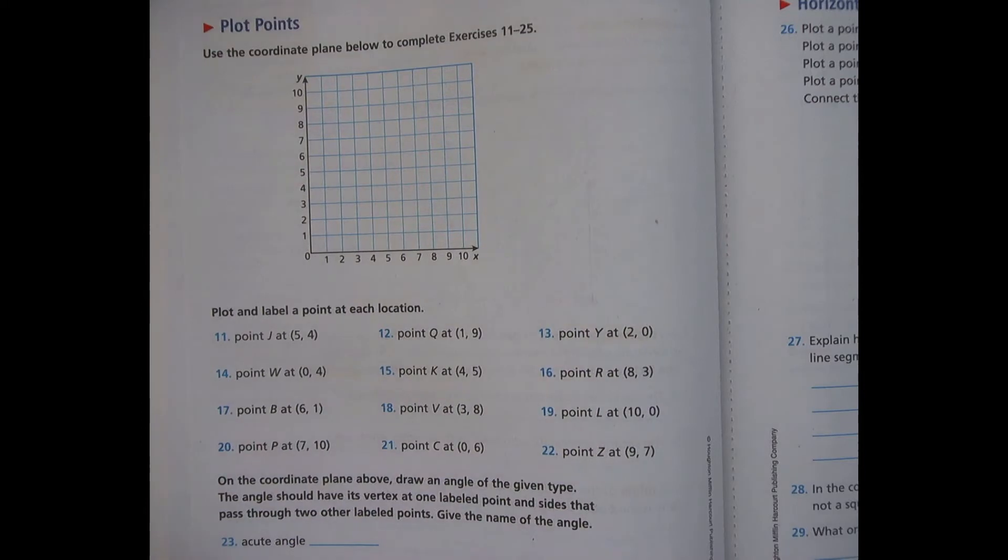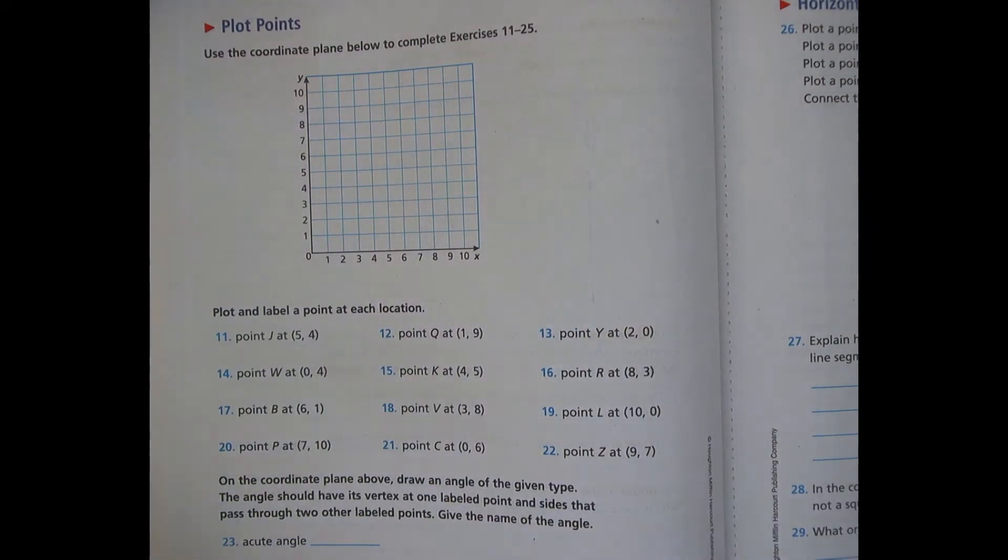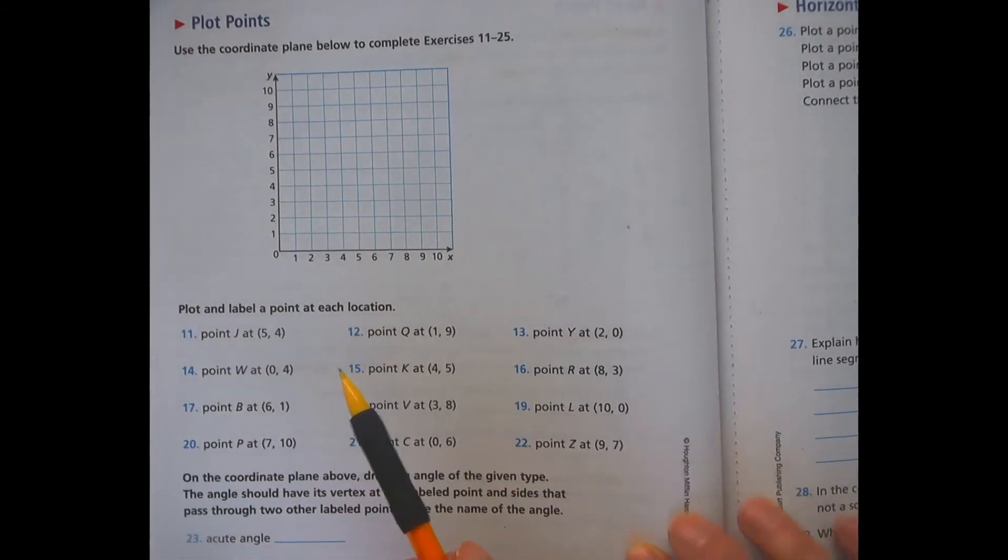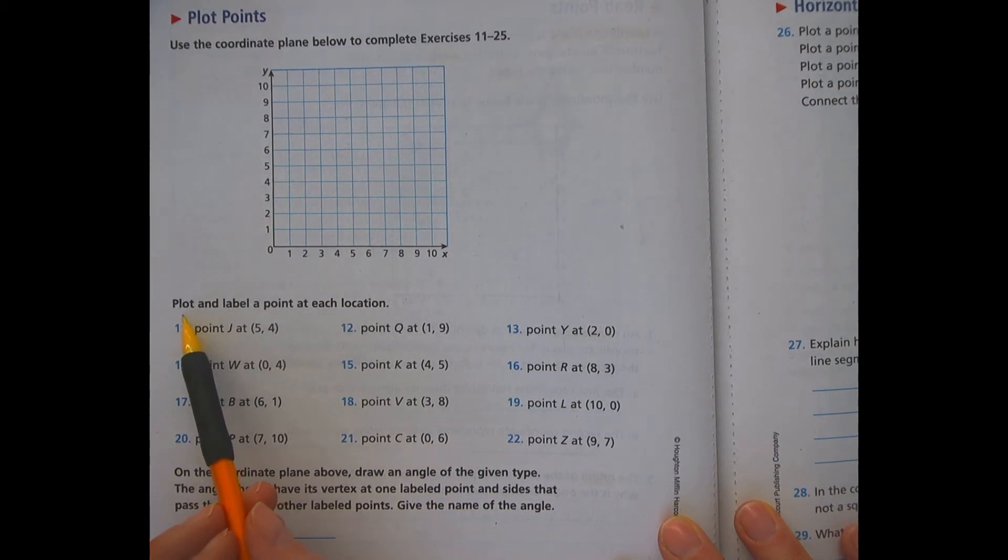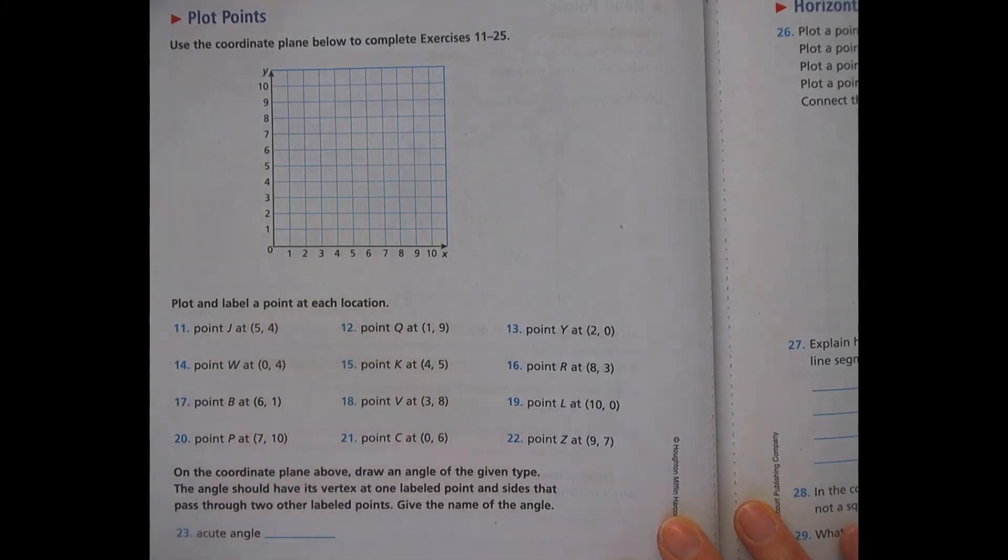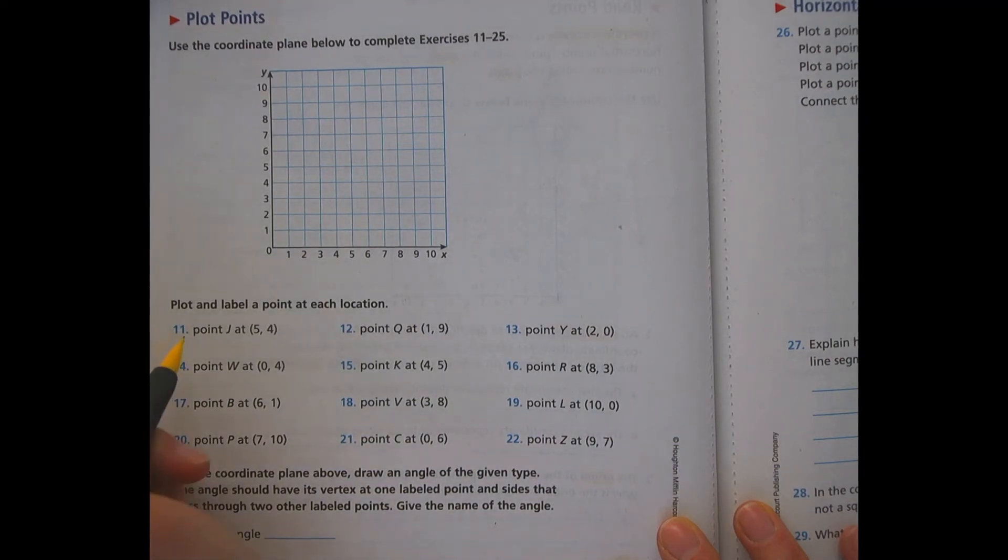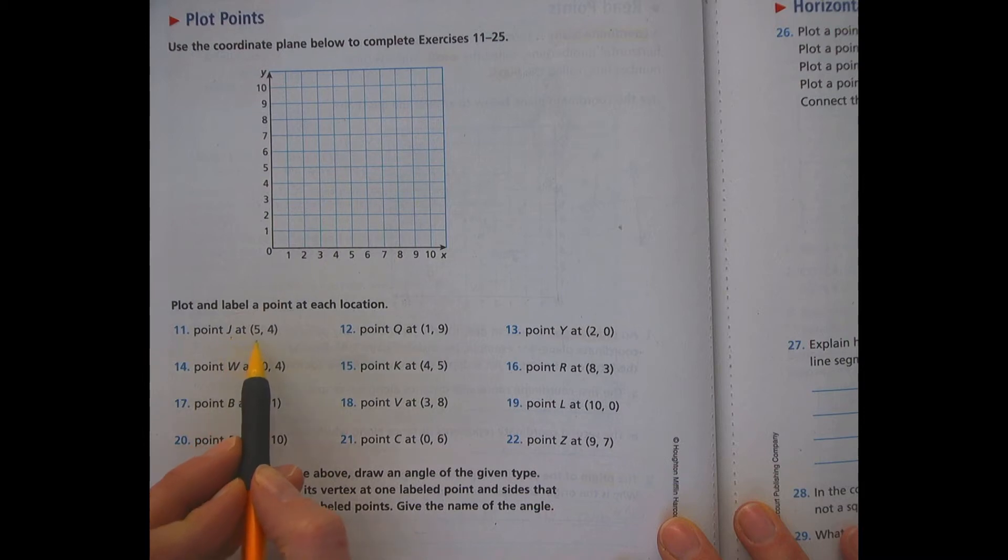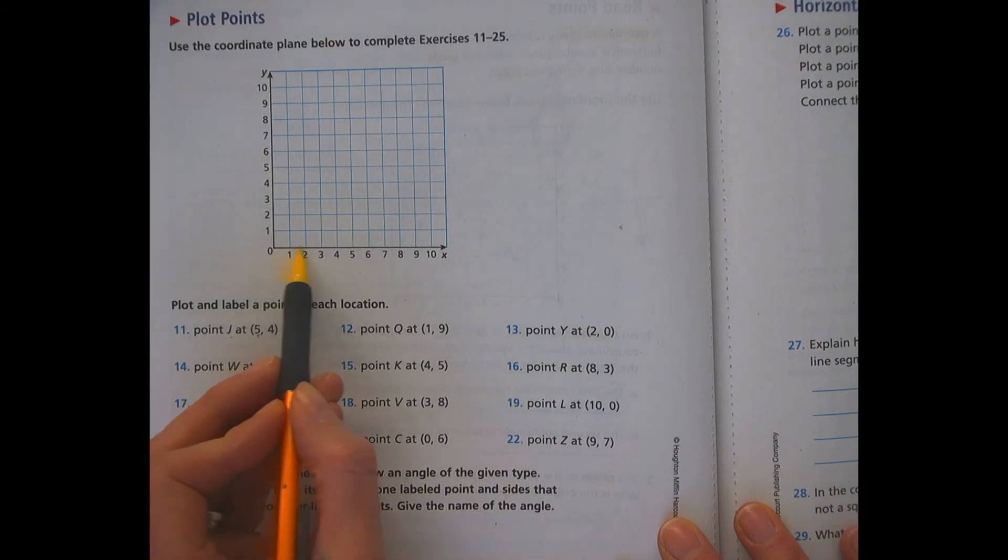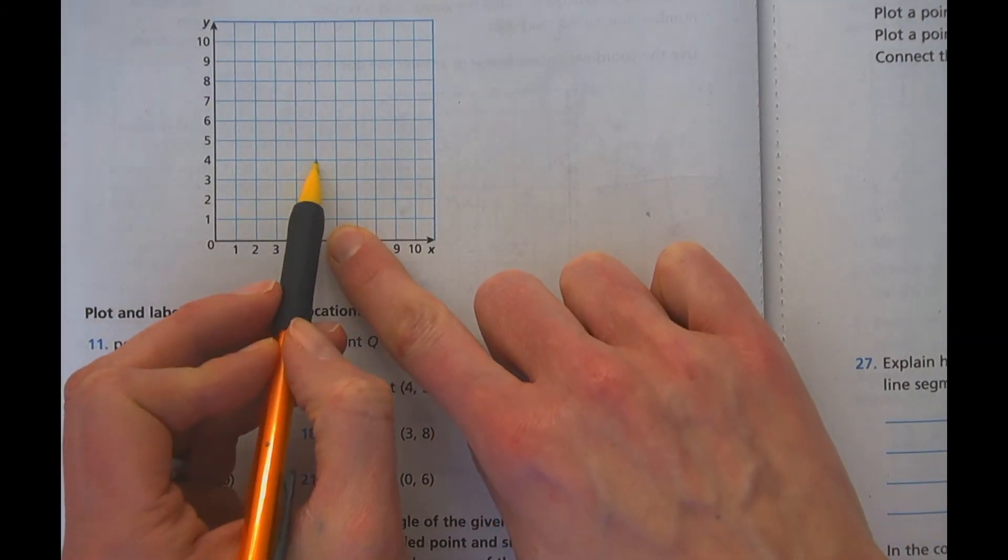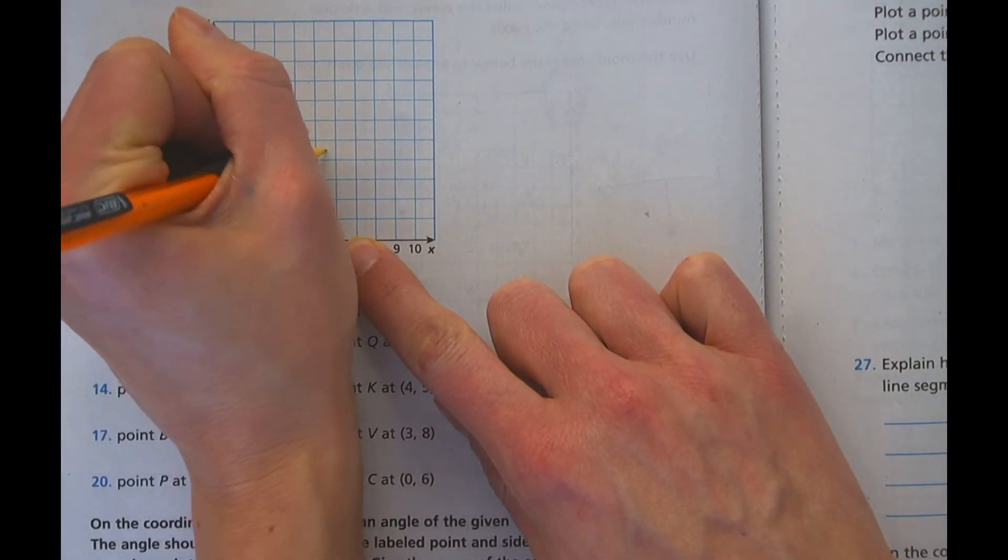All right. Now this is sort of my favorite part, because what we get to do is actually plot the point. You are going to also have this sheet of paper to help you do that. You don't have to recreate your own. And now what we just have to do here is sort of the opposite of what you were doing before. Plot and label a point at each location. And we will do a couple together. So looking here, we're going to find point J at (5, 4). And I remember that five, the first coordinate is the x-axis. So I'm going to go across five here and then go up four. So making sure I follow that line. And here is my point for J.